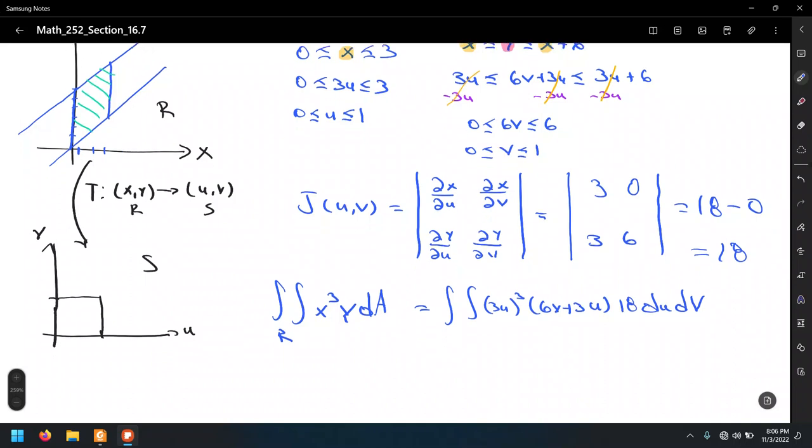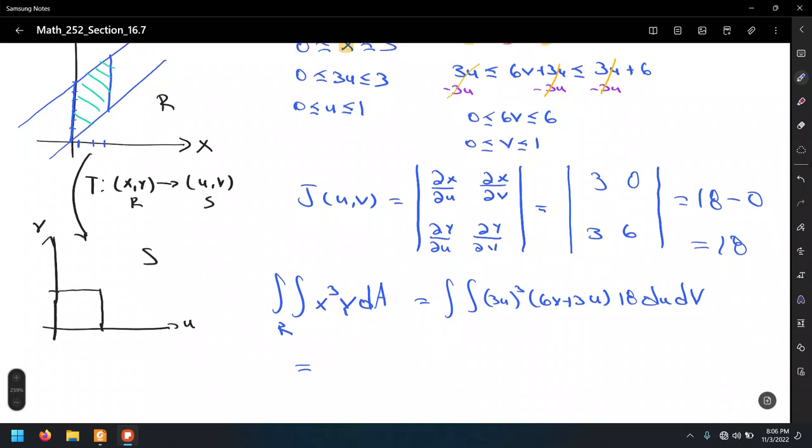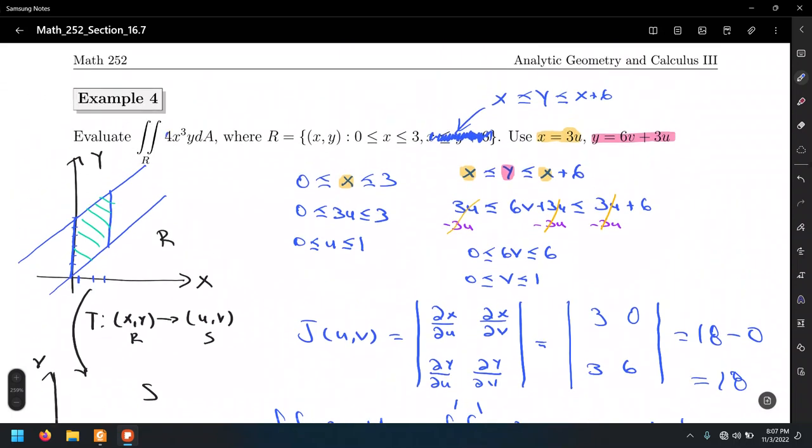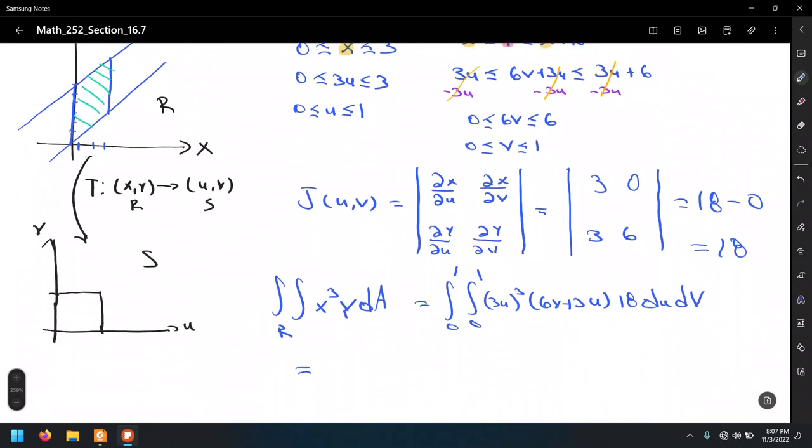I left a space for the correction factor, which in this case is given by the Jacobian determinant, that is 18. The limits are going to go from 0 to 1 for both integrals. You know what? There's not supposed to be a 4 right here. I think I copied and pasted from the previous example, so it's just x cubed y.